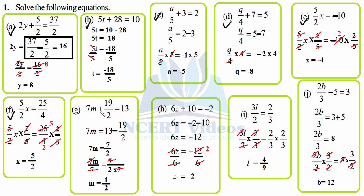Part g: 7m plus 19 over 2 equals 13. Transposing 19 over 2 to the right-hand side, sign changes to minus 19 over 2. 7m as it is. To subtract, make the denominator 2: multiply 13 by 2 over 2 to get 26 over 2. So 26 minus 19 is 7, giving 7m equals 7 over 2. Divide both sides by 7 — 7 cancels — so m equals 1 over 2.